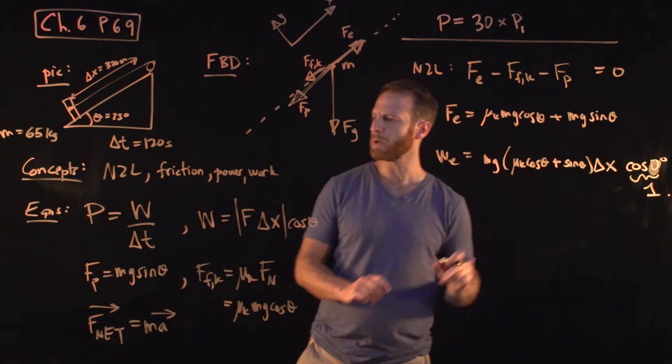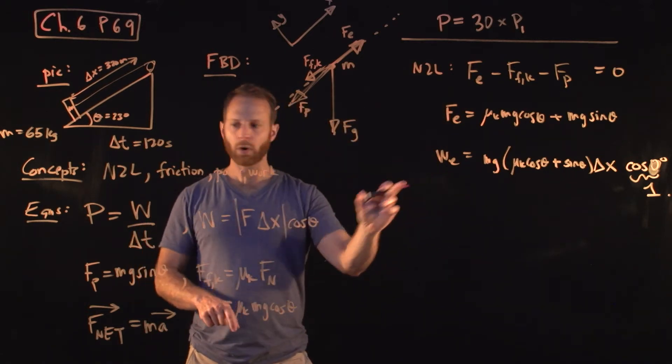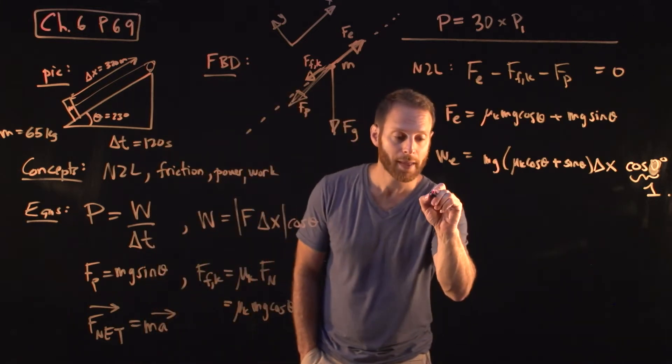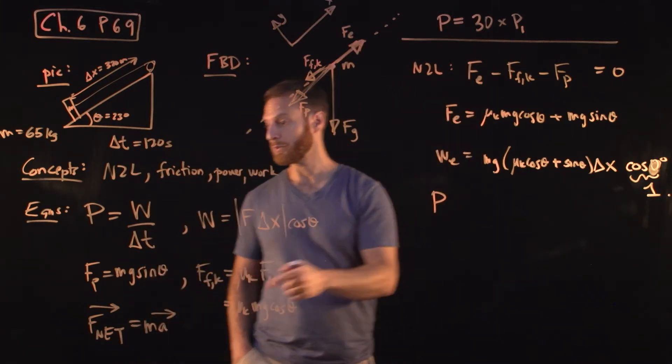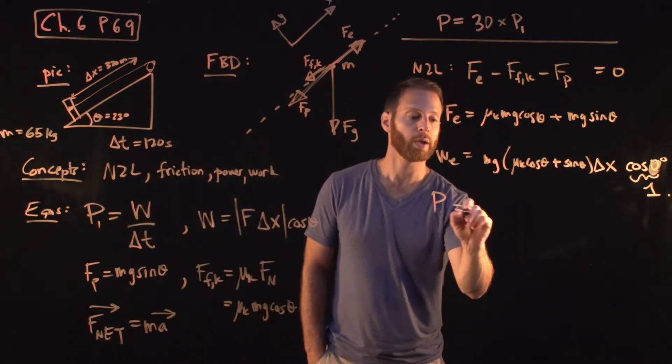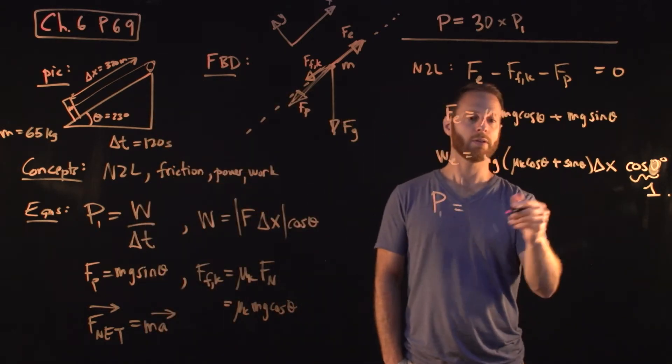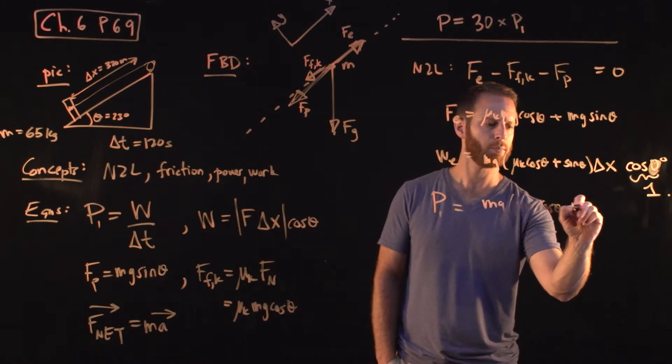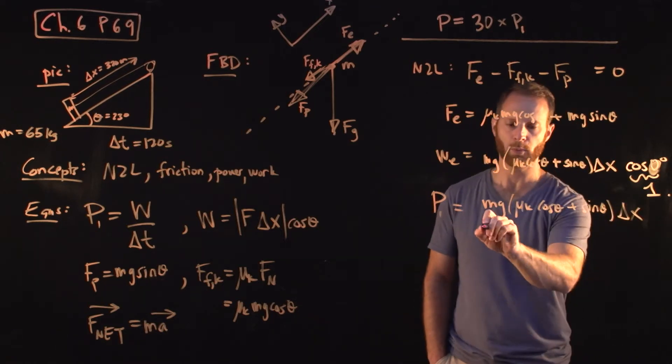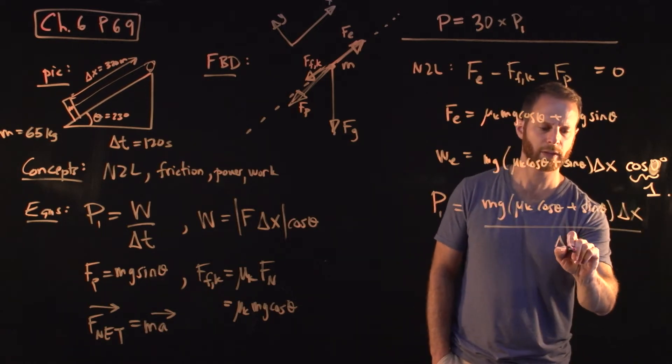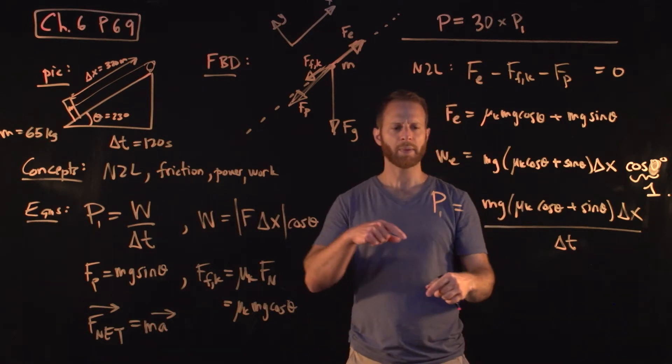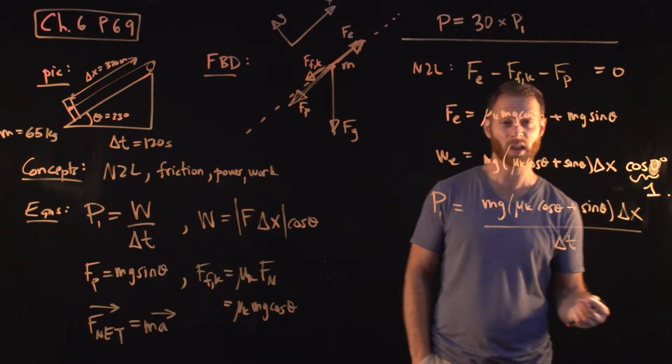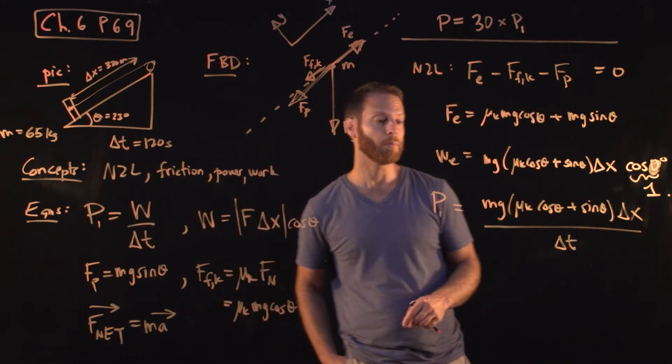If we divide that work by the time elapsed, which is the 120 seconds, we know the power required to get one person, that's what this is, the one person going up the ramp, is therefore this, mg, mu k, cosine theta, plus sine theta, the delta x, and then we'll divide by the delta t. And this is another way to see how you can end up getting the power by a force times a velocity, because this delta x over delta t, that's really the velocity, or the speed, of the person going up the ramp.